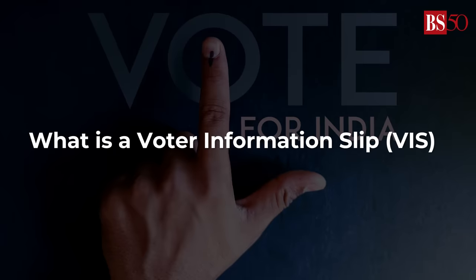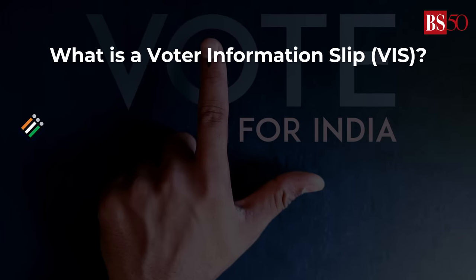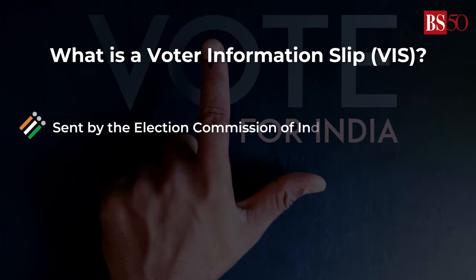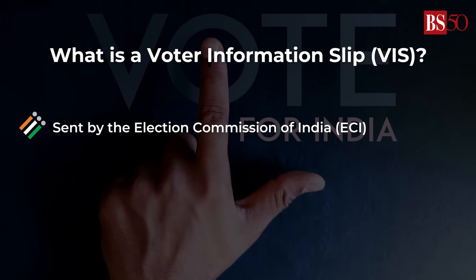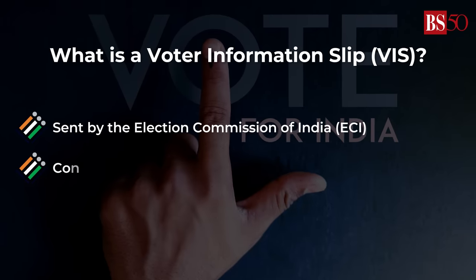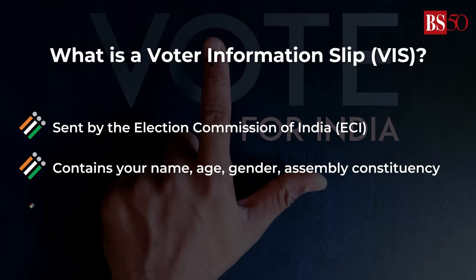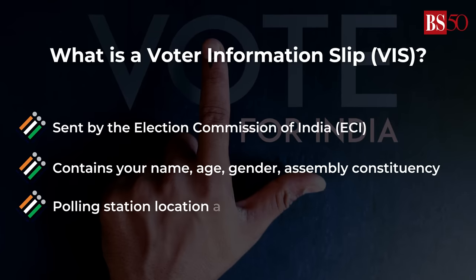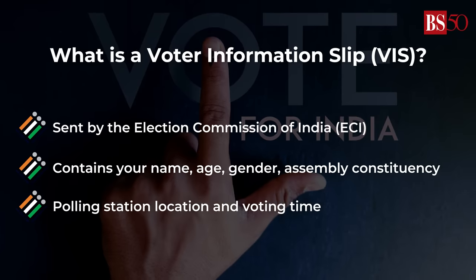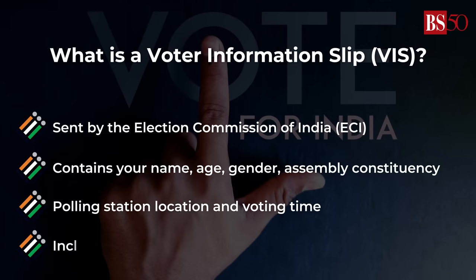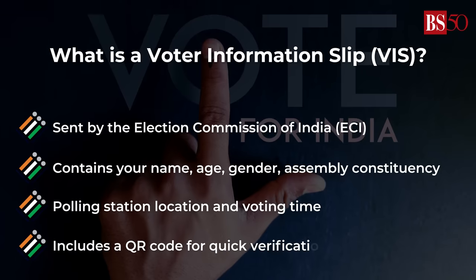What is a voter information slip? It's sent by the Election Commission of India and contains your name, age, gender, assembly constituency, polling station location, and voting time. It also includes a QR code for quick verification.